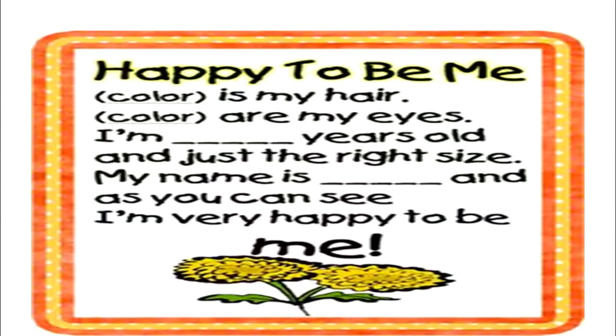We can also have an activity where the child is given blanks to fill in that form their poem. The poem 'Happy to Be Me' can be given with blanks for the color of the child's hair, eyes, their age, and their name. When the child fills in those blanks, the poem becomes their own. For example: 'Black is my hair, black are my eyes. I'm eight years old and just the right size. My name is Soham and as you can see, I'm very happy to be me.' The child learns to love poetry and understands that poems can be written by them as well.